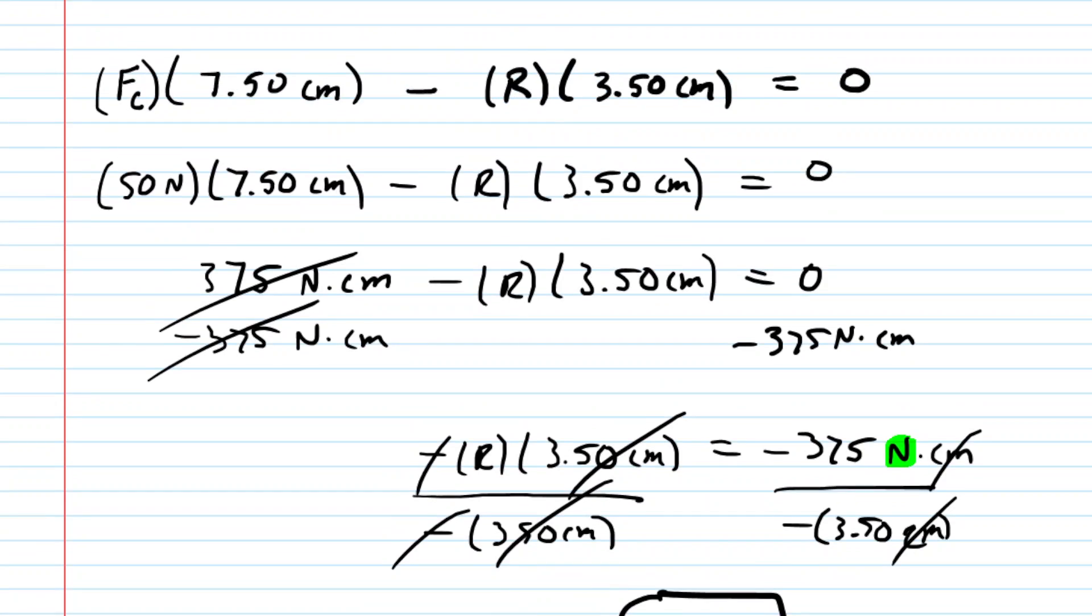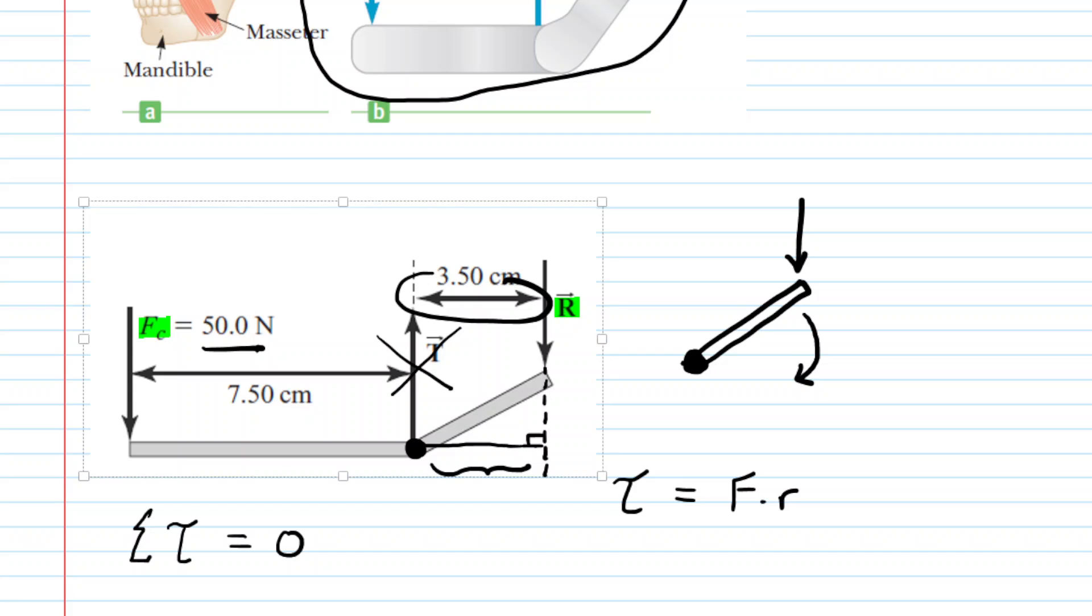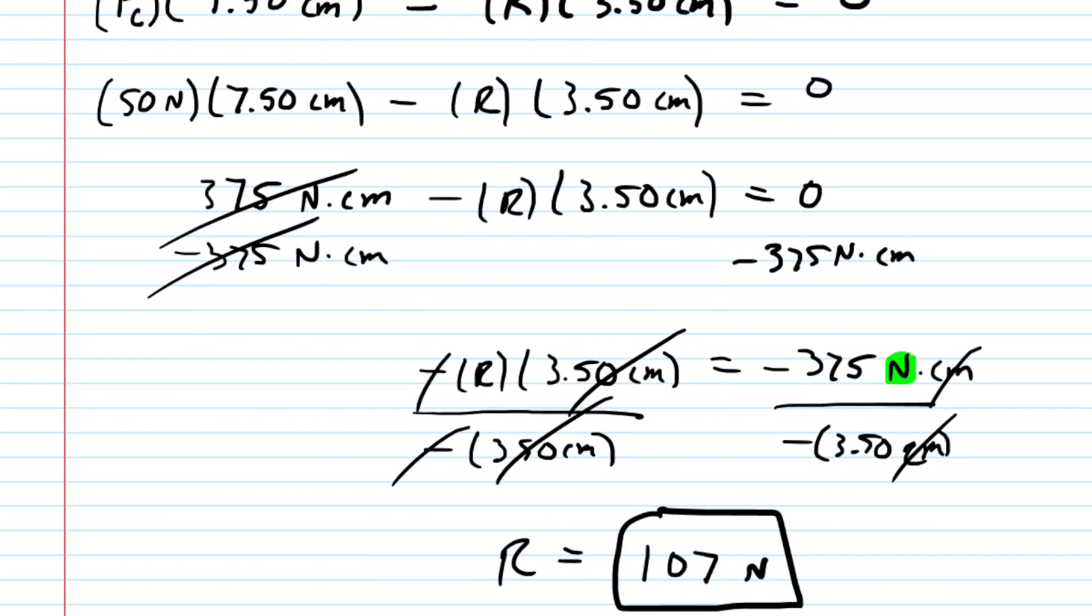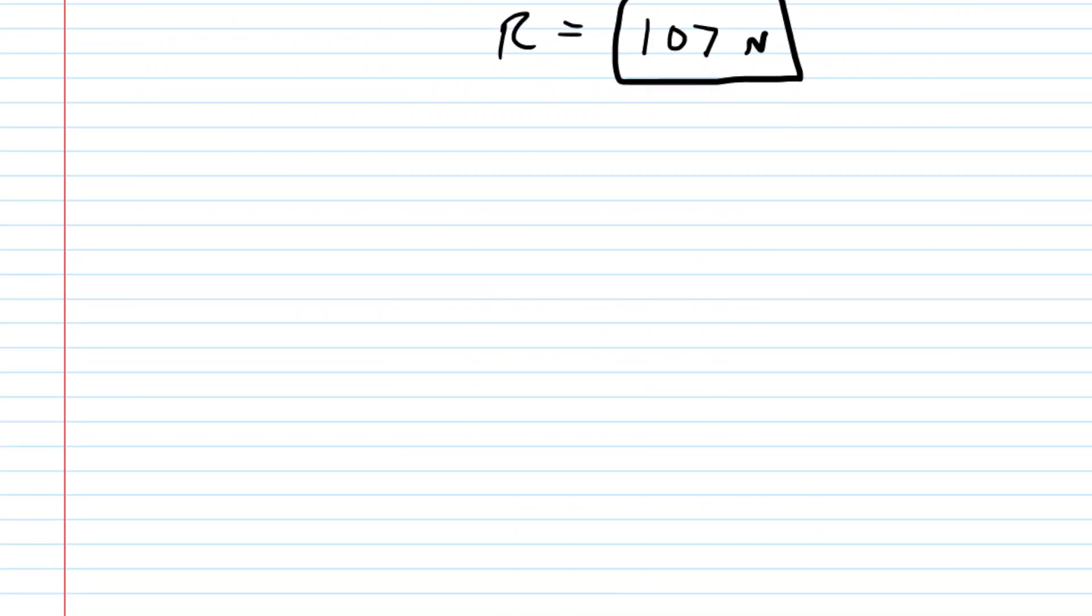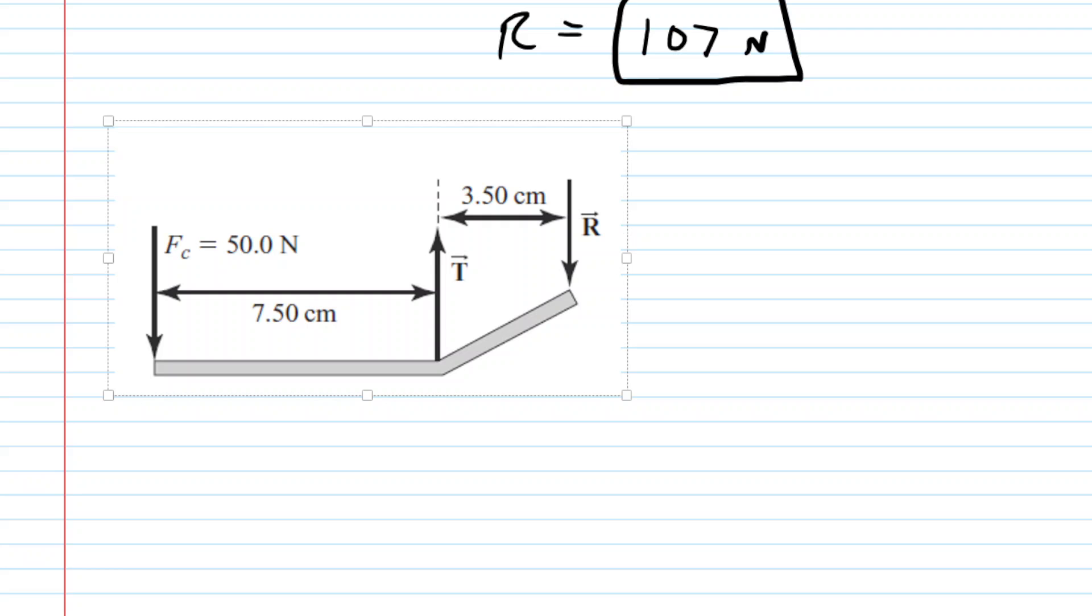To solve for that T force, we're going to go back to our free body diagram. And we're going to sort of plug in the value of R that we just obtained. And then we're going to use another equilibrium equation. And we know that the sum of the forces that are acting in the y direction would have to equal zero as well. Now, there are only three forces acting in the y direction, the three forces that are in the free body diagram.